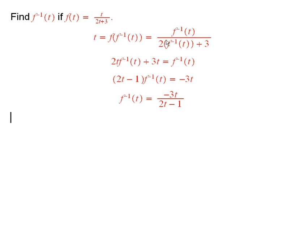So first multiply through by this denominator and we get this, and that's equal to f inverse of t. Then subtract this from both sides which gives 2t minus 1 times f inverse of t.